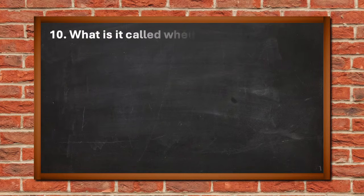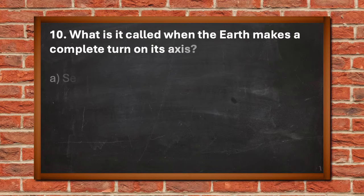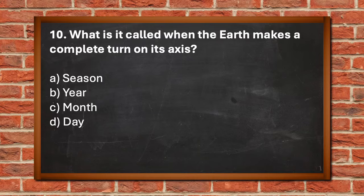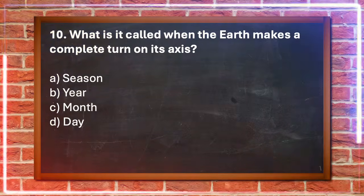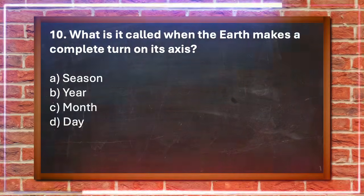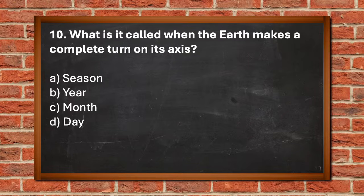Number 10. What is it called when the earth makes a complete turn on its axis? A. Season, B. Year, C. Month, D. Day. The answer is D. Day.